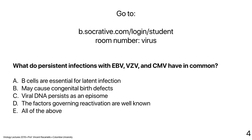A final poll asked what EBV, VZV, and CMV persistent infections have in common. The correct answer is that viral DNA persists as an episome. B cells are essential only for EBV; congenital birth defects occur only with CMV; and the factors governing reactivation are not well known for all three.